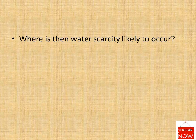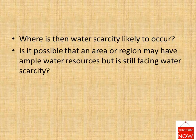Where is water scarcity likely to occur? Fresh water can be obtained directly from precipitation, surface runoff, and groundwater. An area or region may have ample water resources but still face water scarcity. Water scarcity may be an outcome of large and growing population and consequent greater demands for water, as well as unequal access to it. A large population means more water not only for domestic use but also to produce more food. To facilitate higher food grain production, water resources are being over-exploited to expand irrigation areas and dry-season agriculture.